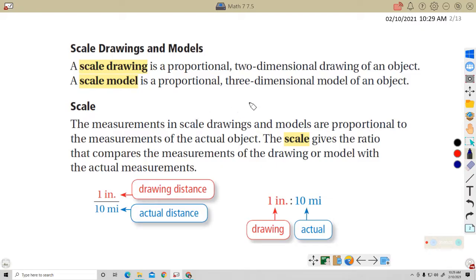A scale drawing is a proportional two-dimensional drawing of an object. A scale model is a proportional three-dimensional model of the object. So the drawing isn't a model. You know what a model is as well. The fact that it's the scale means it's proportional.